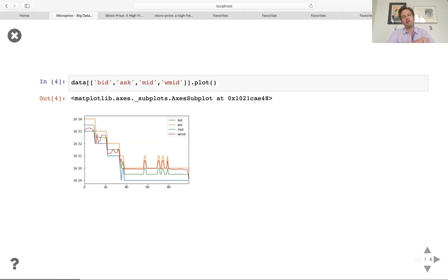Now, if you plot the bid, the ask, the mid and the weighted bid, you can get a sense of the behavior of these quantities. First of all, the mid is a somewhat medium term signal in the sense that it moves every, in this case, every 10 updates or so.